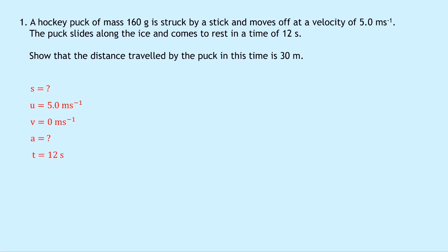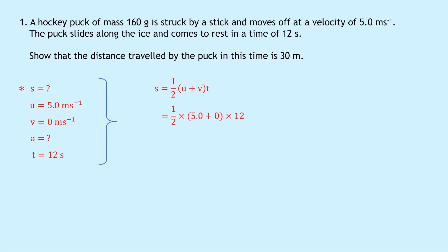I'm going to put a star next to s because that's the one we're trying to find. Writing down our new equation of motion because we don't know a, we have s = ½(u + v)t. Substituting in the numbers: s = ½ × (5.0 + 0) × 12. Putting that into the calculator gives an answer of 30 meters.